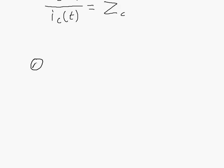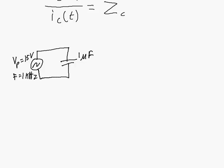Here we've got a sinusoidal voltage source with a peak voltage of 15 volts and a frequency of 1 kilohertz applied to a 1 microfarad capacitor. We want to find an equation for the current through the capacitor. The voltage Vc(t) has a peak of 15 volts — we'll define it as a sine wave with no phase shift, since all phase shifts are relative and we can pick any point as our zero. So it's 15·sin(2π × 1000 × t).